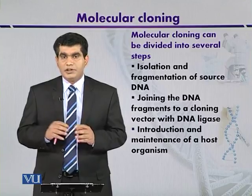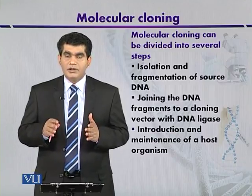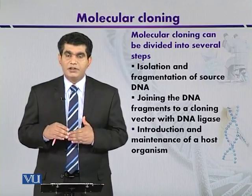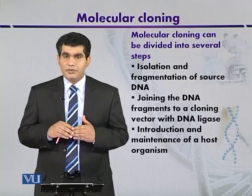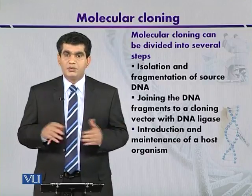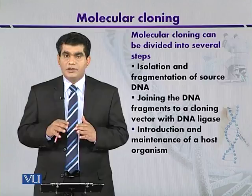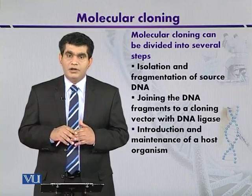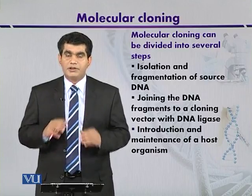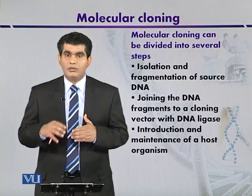If the source DNA is genomic DNA, it can be fragmented — cut into different segments. We can fragment it using different types of restriction enzymes, especially type 2 endonucleases that cut the source DNA at specific points, generating a number of DNA fragments that may also contain your gene of interest.